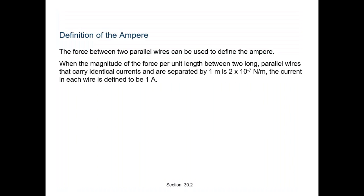The definition of the Ampere: the force between two parallel wires can be used to define the Ampere. When the magnitude of force per unit length between two long parallel wires carrying equal current, separated by 1 meter, is 2×10⁻⁷ Newton per meter, the current in each wire is defined to be 1 Ampere.